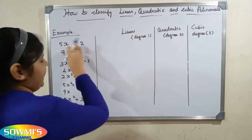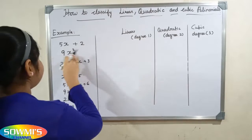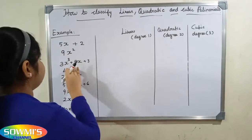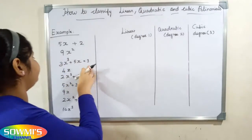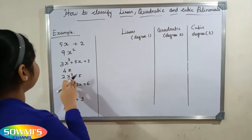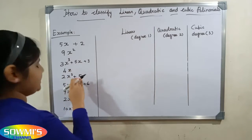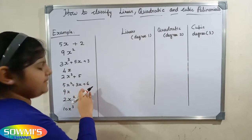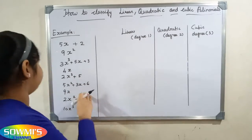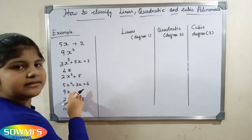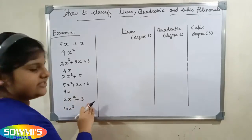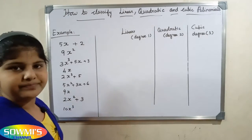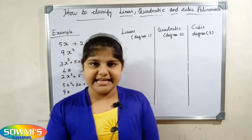For example, we have the following polynomials: 5x plus 2, 9x squared, 3x cubed plus 5x plus 3, 4x, 2x cubed plus 5, 5x squared plus 3x plus 6, 9x, 2x squared plus 3, and 10x cubed.